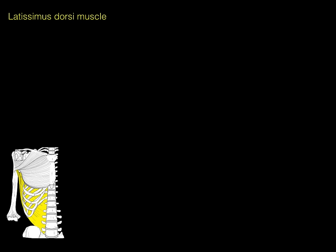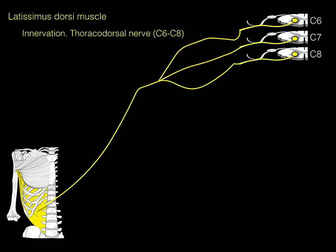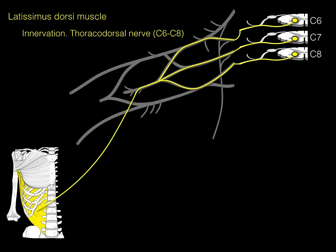The innervation of latissimus dorsi is via the thoracodorsal nerve, which arises from the C6, C7, and C8 spinal cord levels. The motor neuron axon exits the ventral root and ventral ramus, and all three levels converge as they travel down to innervate the latissimus dorsi via branches of the brachial plexus. All you need to know is that the thoracodorsal nerve innervates the latissimus dorsi.